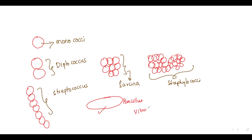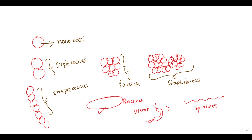Then we have the vibrio bacteria — usually twisted like a comma shape. They usually possess a flagellum on either side, which is amphitrichous. And sometimes you can even have a corkscrew or helically coiled bacteria, which is called spirillum bacteria. So we classify bacteria based on their shapes and based on the presence of the flagella.